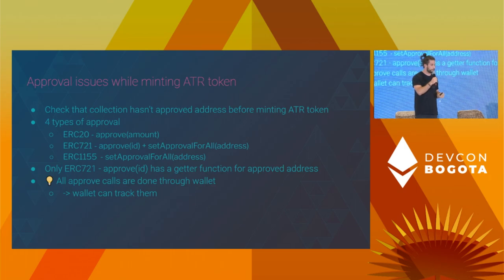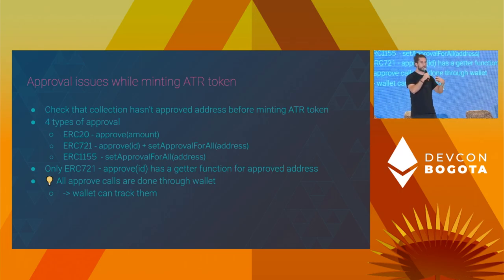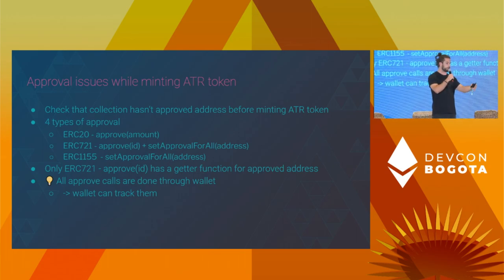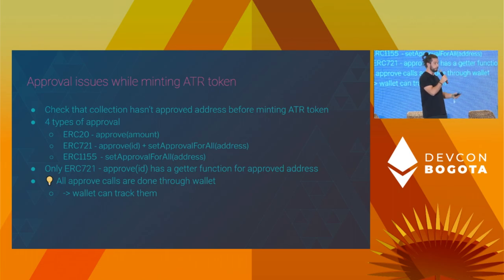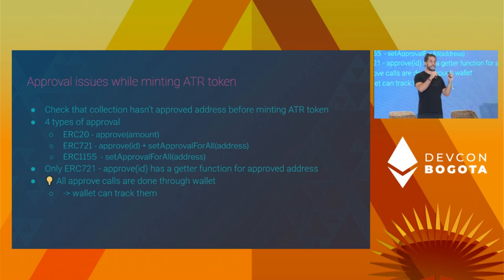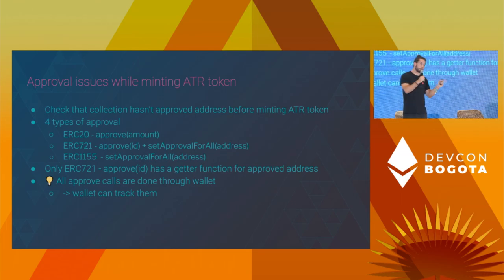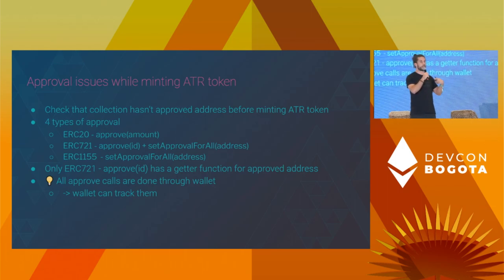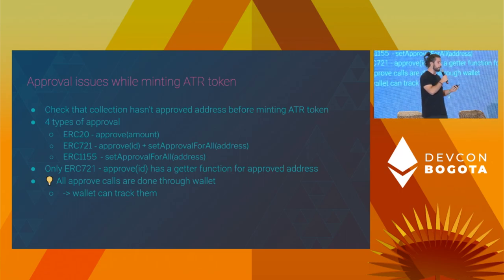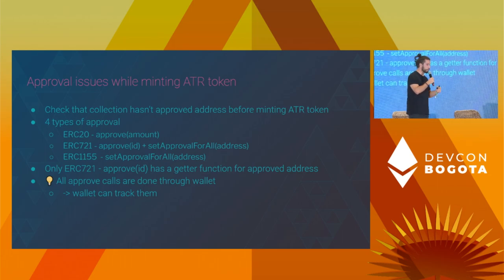Regarding the approval issue while minting the ATR token: we need to check that the asset for which ATR is going to be minted doesn't have an approved address. Currently there are four types of approvals: for ERC-20, it's approval amount; for ERC-721, it's approved ID or set approval for all; and for ERC-1155, it's just set approval for all. Only one of these approved functions actually has a getter for the address, which was a big issue at first. But after realizing that all transactions which approve assets are done through the wallet, we can track all the approved addresses, and at the time of minting, we can check that the asset doesn't have an approved address.